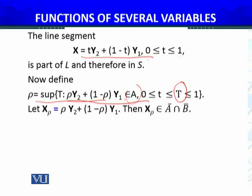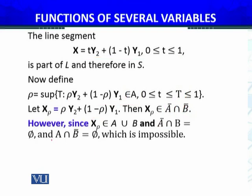Then x_ρ is in the closure of A and closure of B. However, since x_ρ belongs to the line segment in A union B equals S, and A̅ ∩ B = ∅ and A ∩ B̅ = ∅, which is impossible.